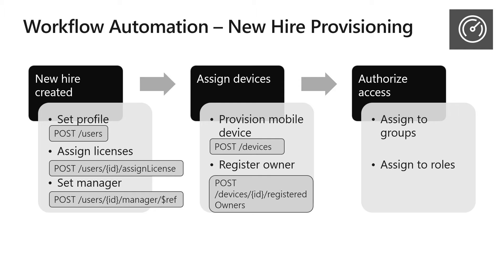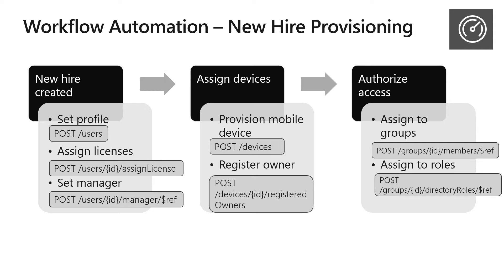You can provision a mobile device, mark that user the owner of the device, and then register that device to Intune, setting up device policies and conditional access policies based on that device. You can also authorize the user to have access to certain resources by making them a member of certain groups. Business logic in the app can automatically assign people to groups based on their department or manager, and you can also have automatic role assignment — for example, assigning help desk staff to a limited admin role.